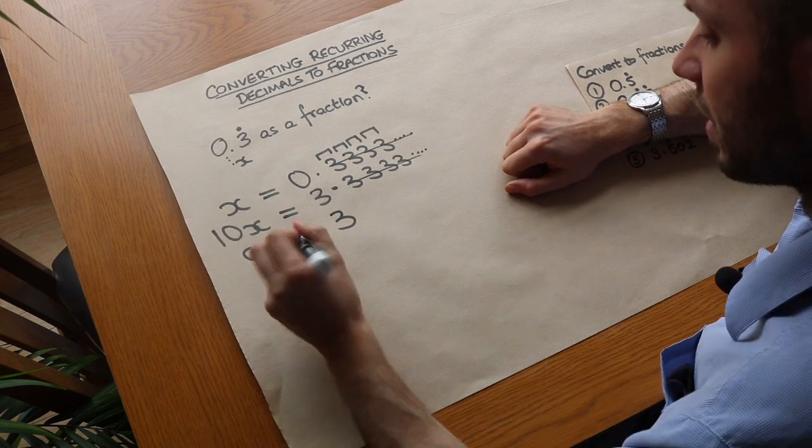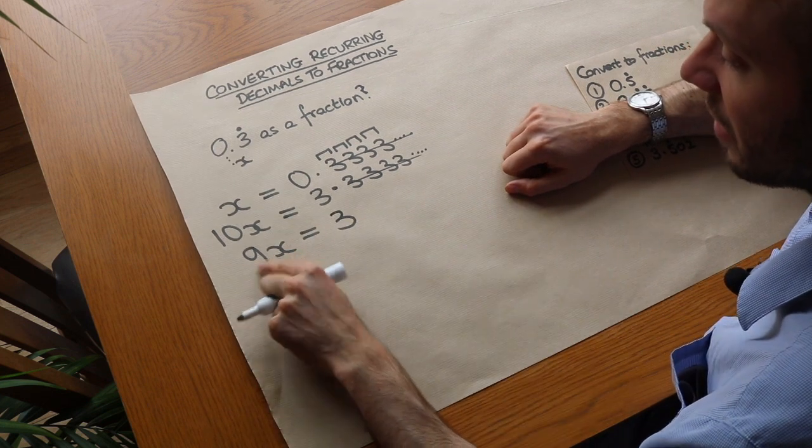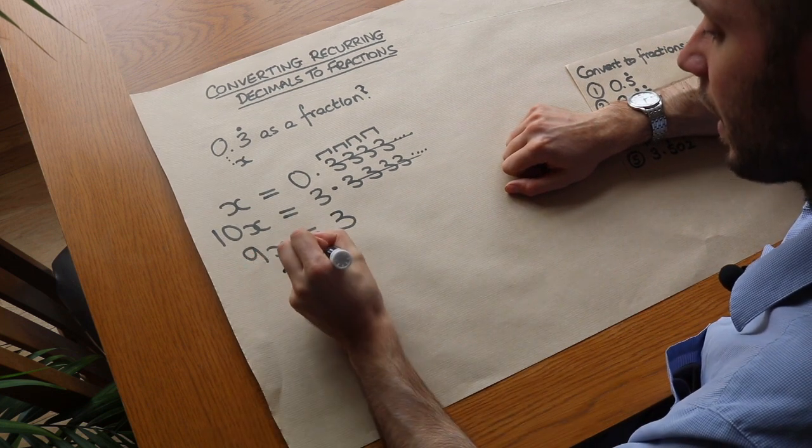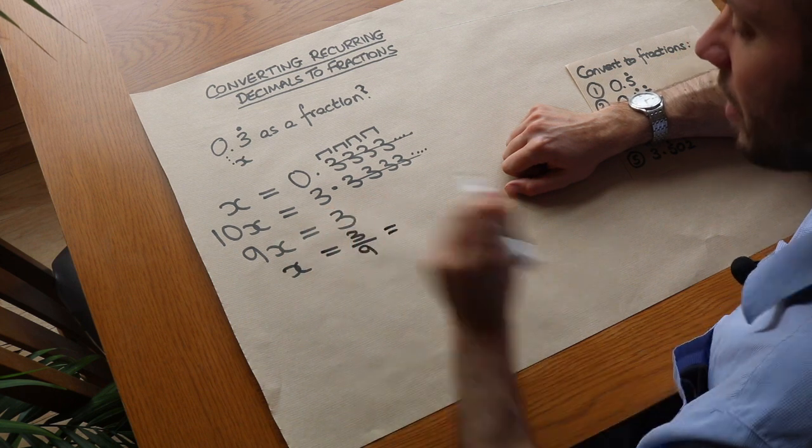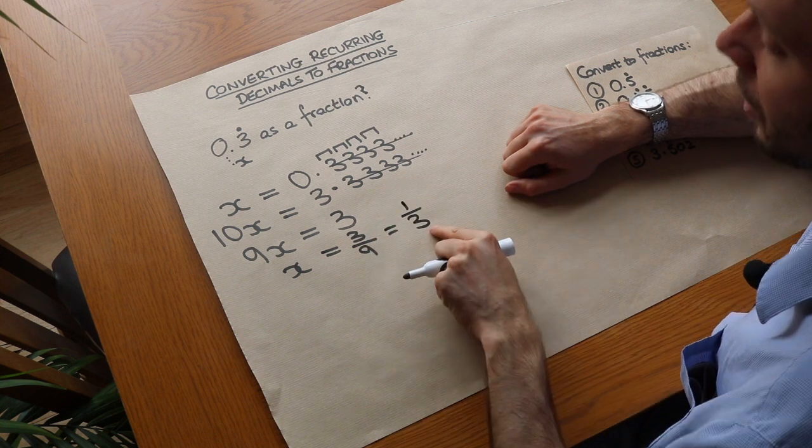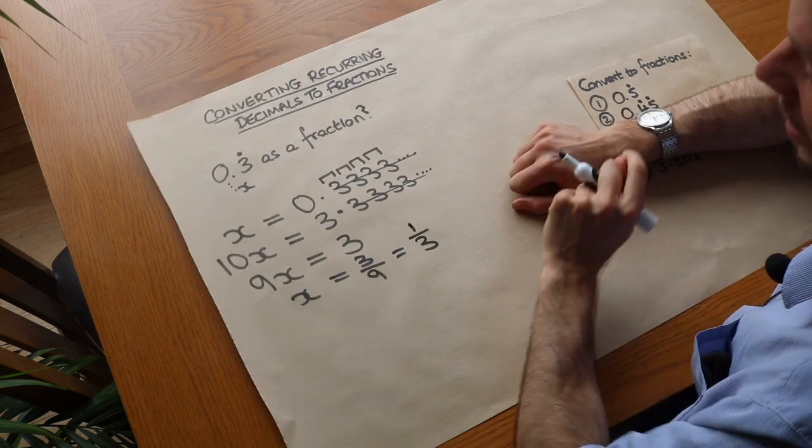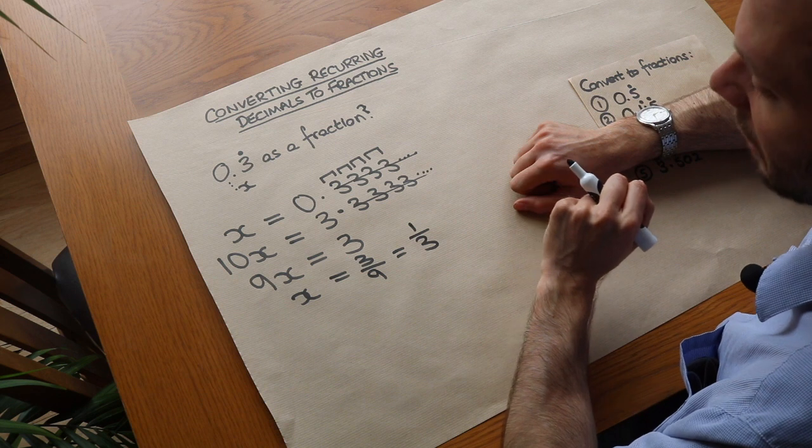So then if we want to find out what x is we just divide both sides by 9 because x is being multiplied by 9. And that gets you x equals 3 over 9. And 3 over 9 simplifies to a third. And a third indeed is the same as 0.3 recurring. You might have known that from before.